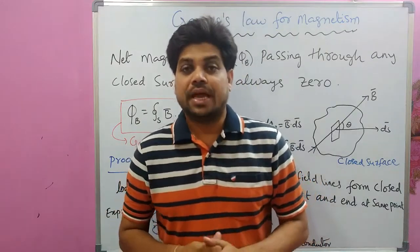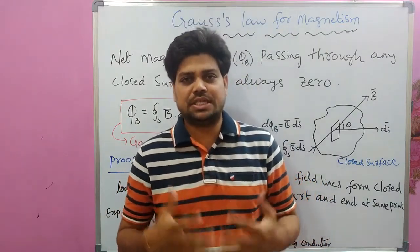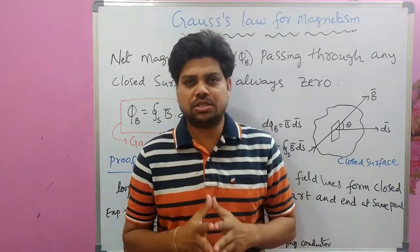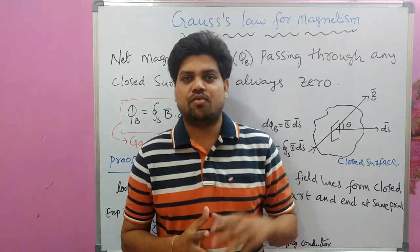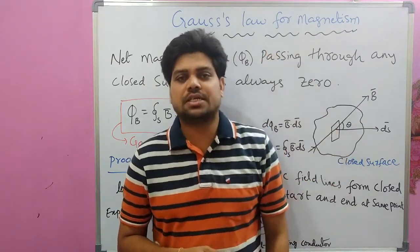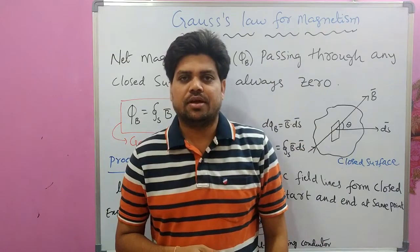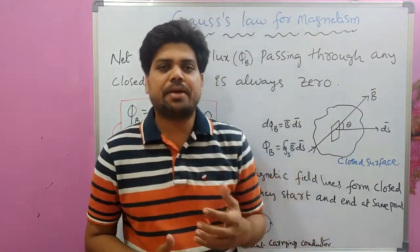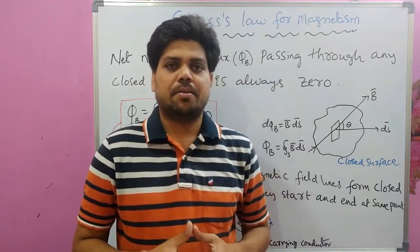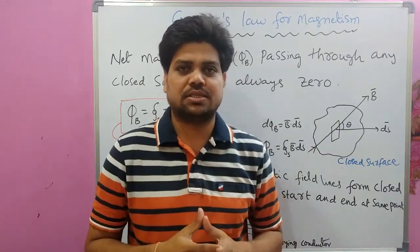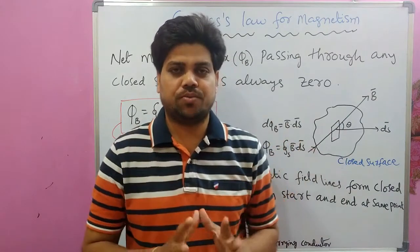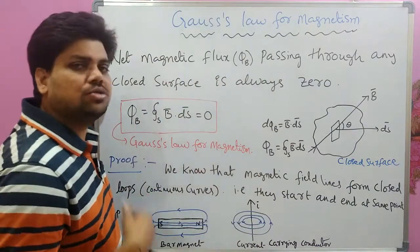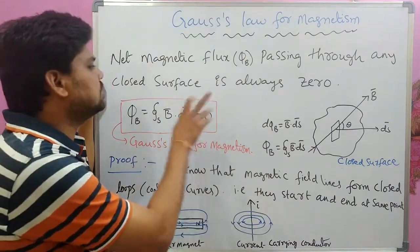Students, this is Madhu Dharmapuri. In this video lecture, we are going to discuss Gauss's Law for Magnetism — a very important concept in magnetism and one of Maxwell's equations. Gauss's Law for Magnetism states that the net magnetic flux passing through any closed surface is always zero.